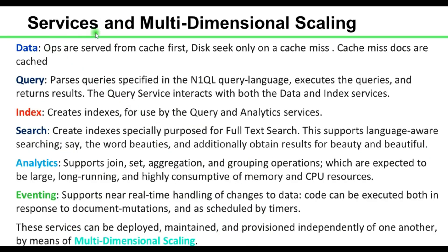These are the list of services. The Data service: operations are served from the cache first, and disk is accessed only on a cache miss. If you fire a select statement and the data is available in cache, it will be served from cache; if not, it goes to disk. The Query service parses and executes queries and returns results — it interacts with both the data and index services. The Index service is used for creation of indexes and interacts with the query and analytics services.